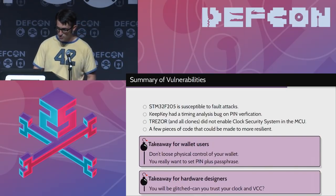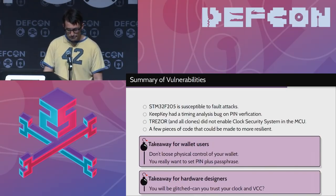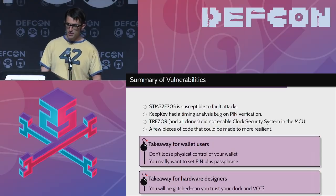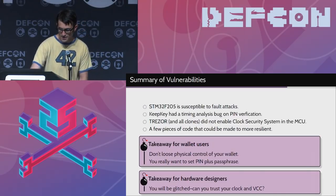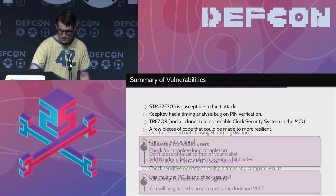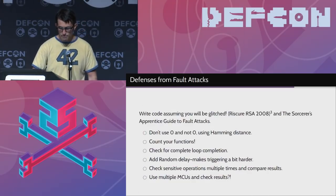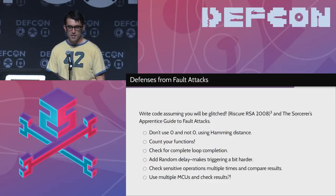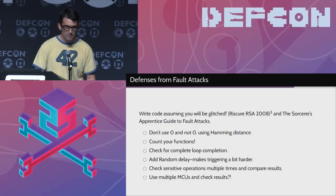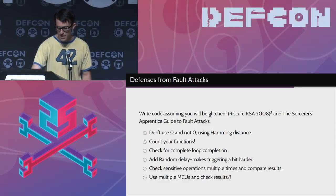If you are a wallet user, don't lose physical control of your wallet. Set a PIN plus passphrase — even though we couldn't glitch past the PIN on the live device, the passphrase also encrypts your private key in two sectors, making it the strongest configuration. If you're a hardware designer for wallets or any IoT device, assume you're going to be glitched and design accordingly. There are good papers on our website on how to write functions resilient to these attacks.